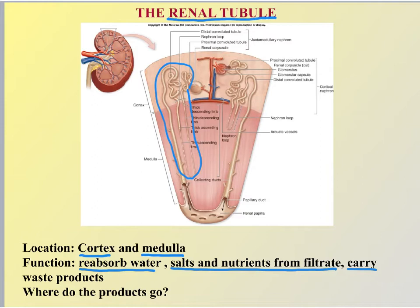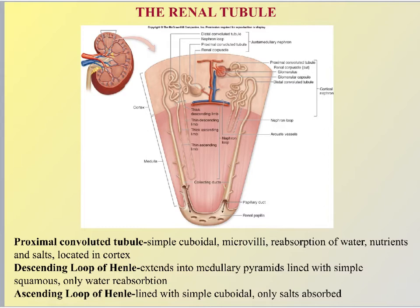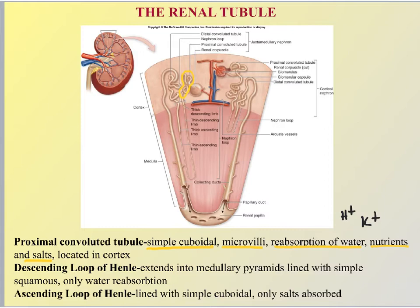What the renal tubules are doing is reabsorbing any water that made its way into Bowman's capsule, reabsorbing salts and nutrients from that filtrate, but also carrying products destined to become components of urine. The first section is what we refer to as the proximal convoluted tubule. This is a body tube lined with simple cuboidal epithelium, which has either an absorptive or secretory function. These cells have microvilli on their surface, so this section is really good at reabsorbing water, nutrients, and salts. It also has a secretory function — it would be secreting excess hydrogen ions or excess potassium.